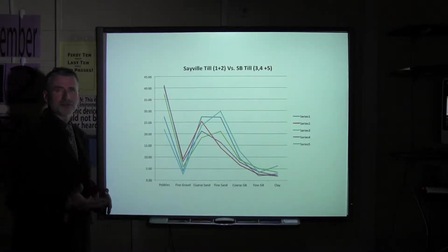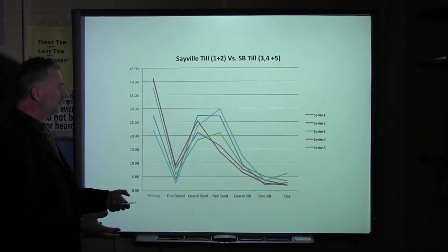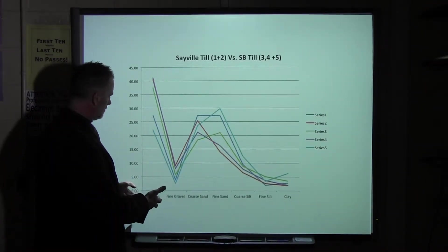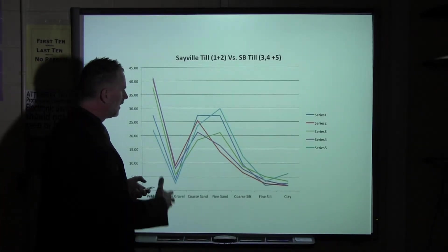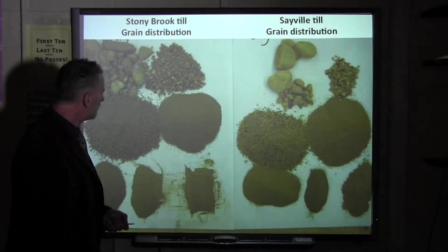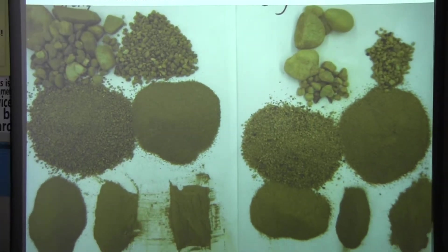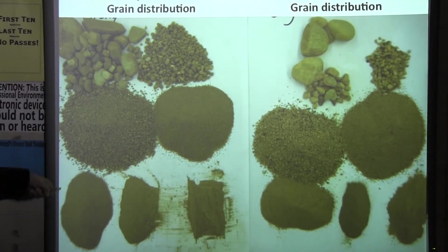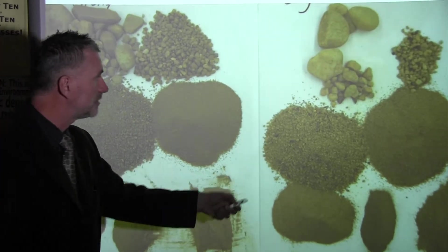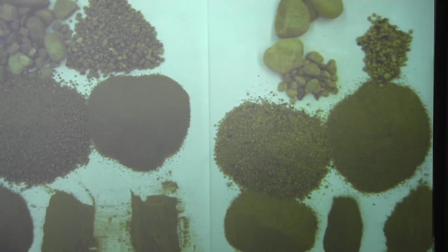If we don't take into consideration the coarse fraction, then the percentage distribution of pebbles, sands, and silt are similar at both locations. Now, the difference comes from the color of those sediments. North shore tills are much darker, and south shore till is light yellow. This suggests a different origin.